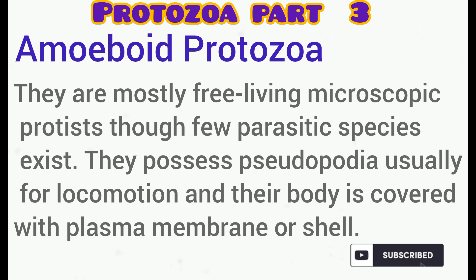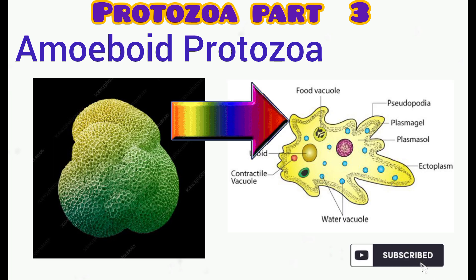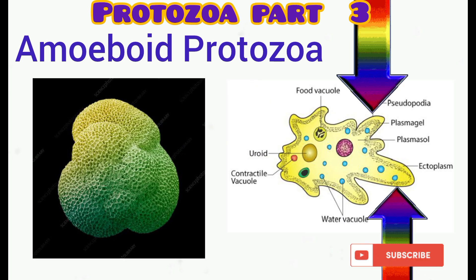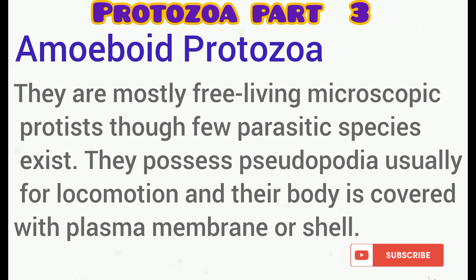Amoeboid protozoas are free-living microscopic protozoa, though there are a few parasitic species. Their body is covered with a plasma membrane or shell, and they usually possess pseudopodia for movement and other functions.